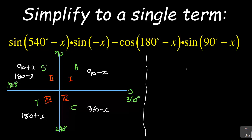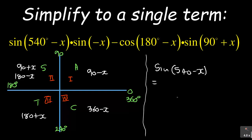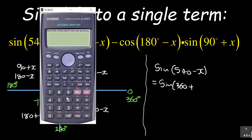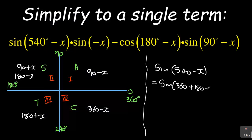Let's start with sine(540 - x). Let's see what this simplifies to. When we're talking about 540, you can see that the complete cycle is 360, so we have gone beyond the complete cycle. We can write it as sine(360 + 180 - x) — because 540 minus 360 gives 180. Since 360 is a complete cycle, this simplifies to sine(180° - x).